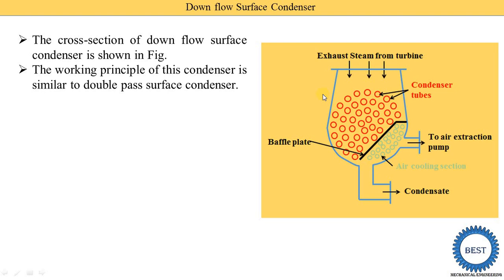In a jet condenser, steam and cooling water are directly mixed. But in a surface condenser they are not directly mixed — some mediums are there.